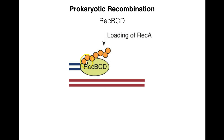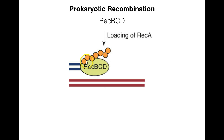We have our three-prime overhang; remember the five-prime end is here. REC-BCD is allowing this three-prime overhang to be made, and then REC-A is loaded onto the three-prime end. Just as we showed before, REC-A is going to facilitate invasion into the homologous duplex, allowing the strand to pair with the strand on the homologous sequence.